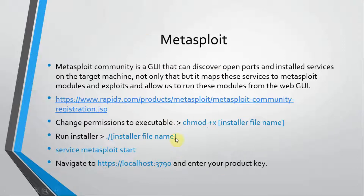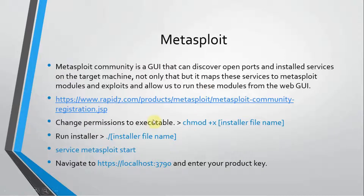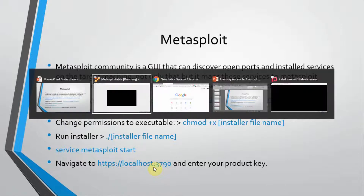Here is the link from where you can download Metasploit Community, because we have to download and install it manually — it does not come pre-installed with Kali Linux like Metasploit does. It is going to ask for your information like your name and phone number, then send you a verification code, and you can use it for free. Once downloaded, we have to change the permission to executable using chmod, then run it using the dot-slash command.